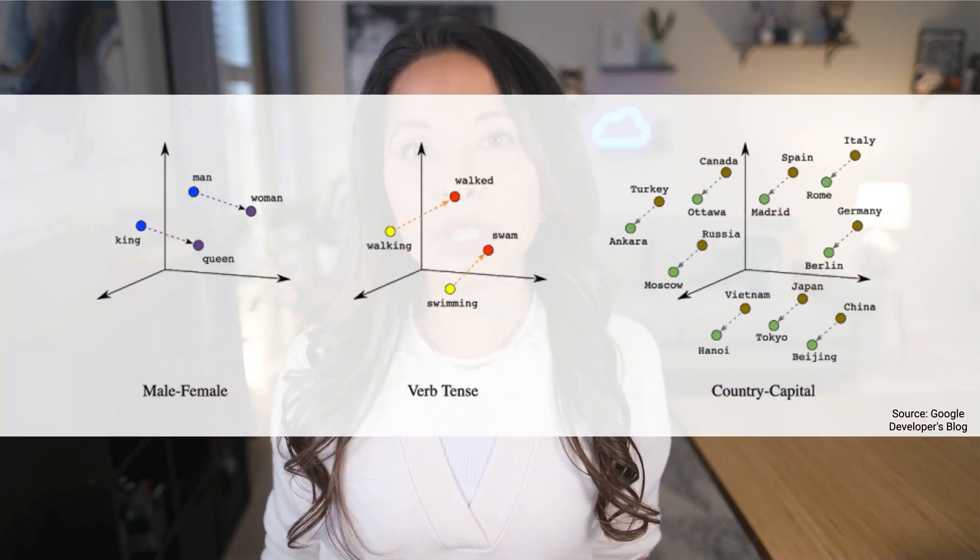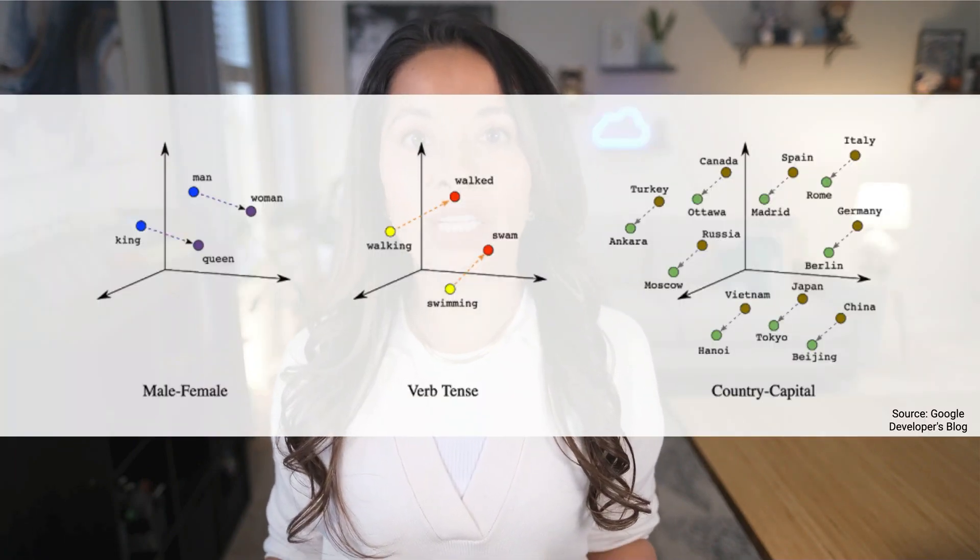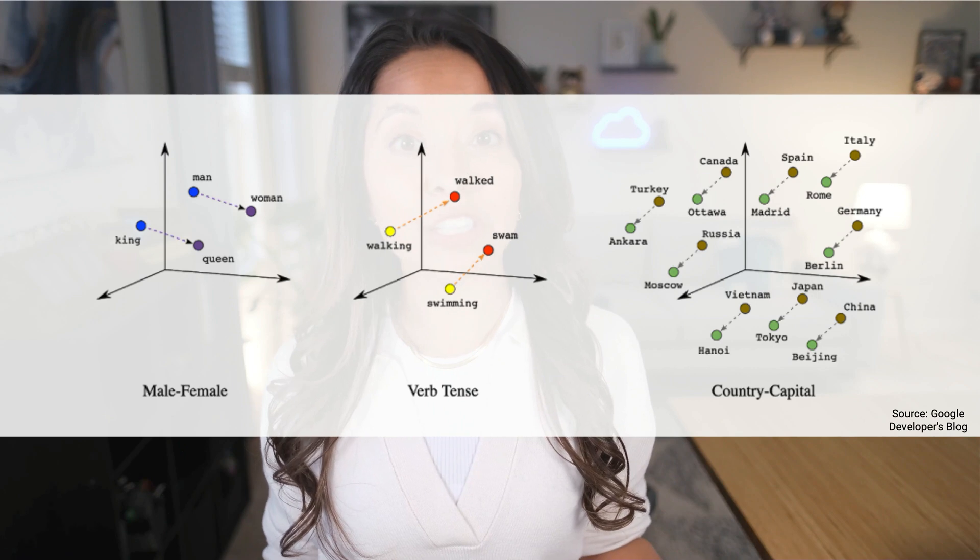This is where it gets really cool. Think of a vector as a series of numbers — but not just any numbers. These are coordinates for where the original object, that text, image, audio, etc., are catalogued. This is like the old-school Dewey decimal system in the library, where objects that have similar characteristics get grouped together. Things that have similar meaning are located near each other in vector space.